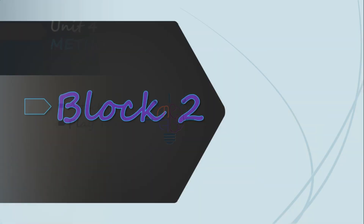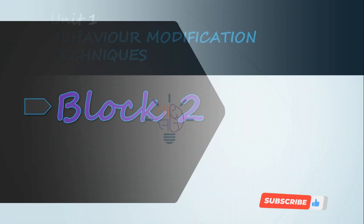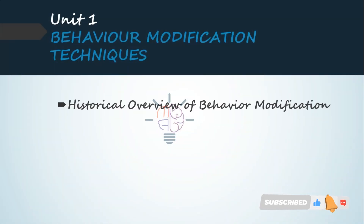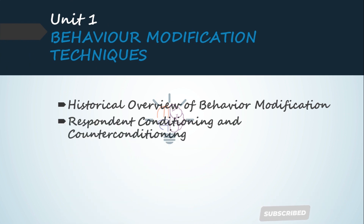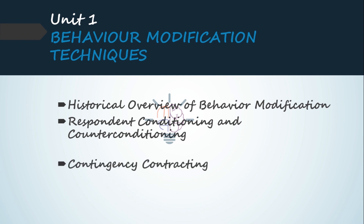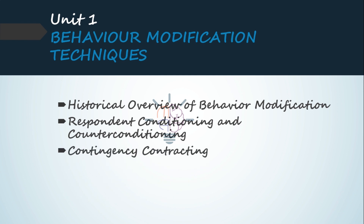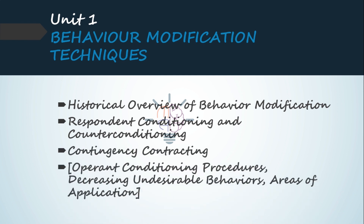From Block 2, Unit 1: Historical Overview of Behavior Modification, Respondent Conditioning and Counter-Conditioning, Contingency Contracting, Operant Conditioning Procedures, Decreasing Undesirable Behaviour, and Areas of Application.